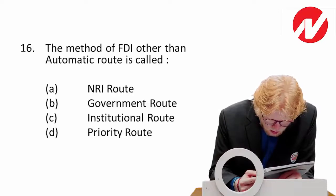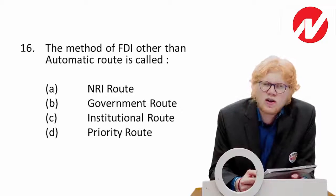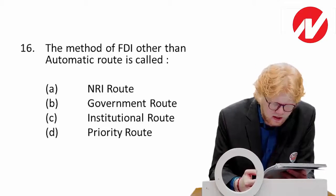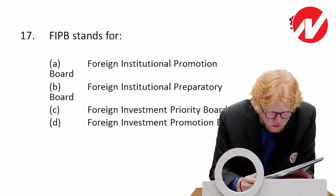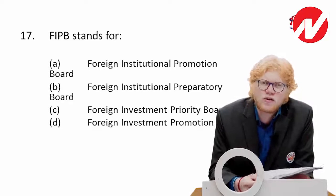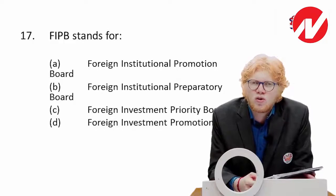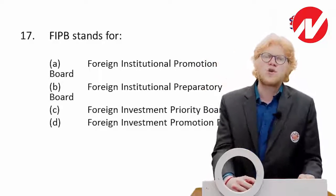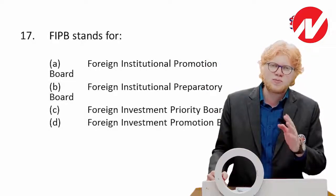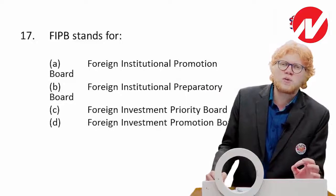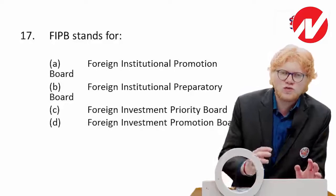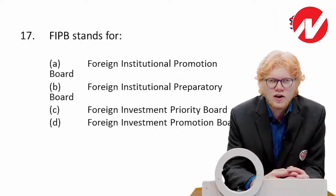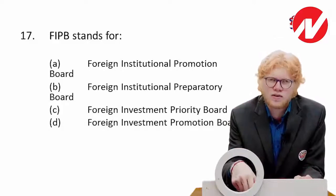The method of FDI other than the automatic route is called the government route — you can also say approval route. Both terms are correct. Next: FIPB stands for Foreign Investment Promotion Board. Students often confuse 'promotion' with 'prohibition' — it is promotion, not prohibition. This board exists to promote foreign direct investment within the limits and caps set by the Government of India, with the aim of advancing the economy.